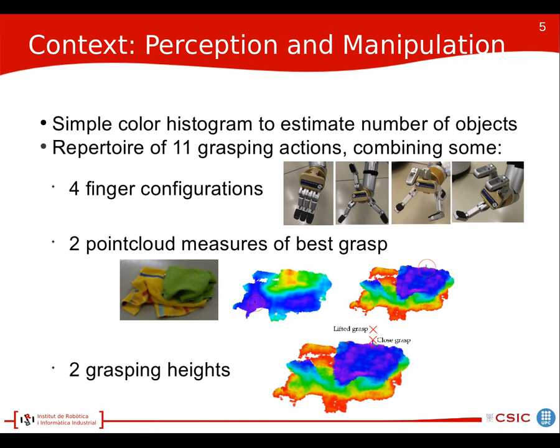The perception and manipulation provided to the planning will be a simple color histogram that estimates the number of objects at each area, and a repertoire of 11 grasping actions that combine finger configurations and different algorithms to obtain the best grasping point using wrinkleness analysis and height analysis. Additionally, there is a modification of the grasping point depending on whether a more subtle or more rough grasping is desired.